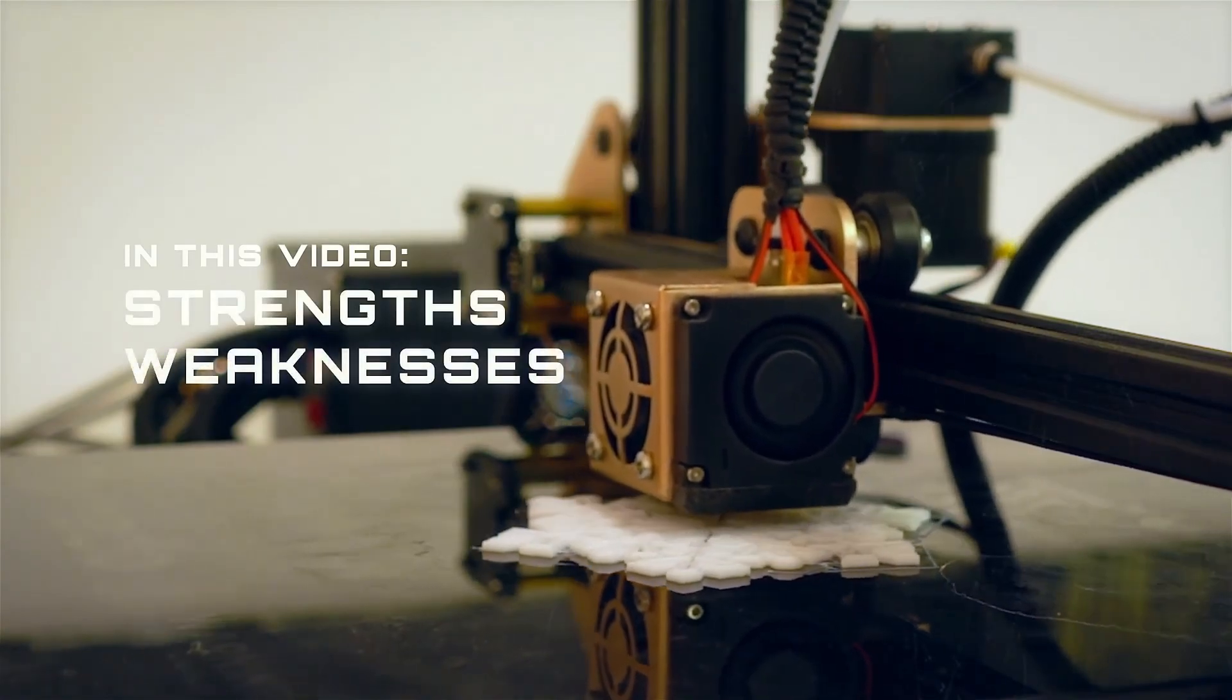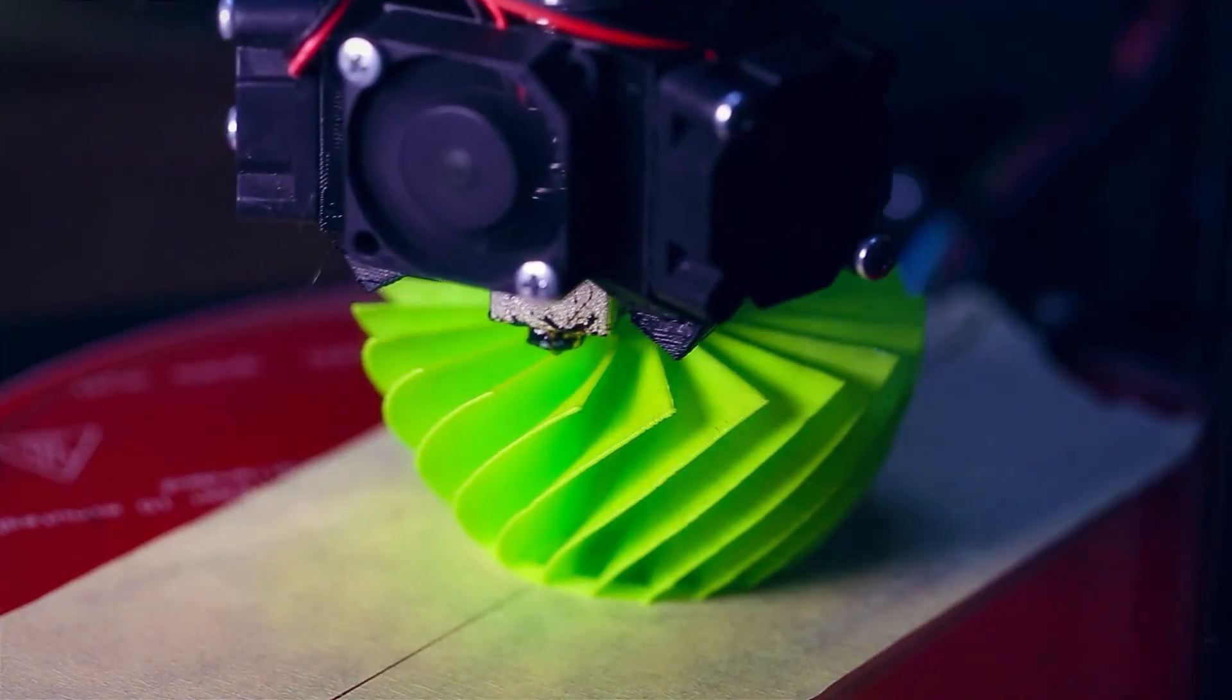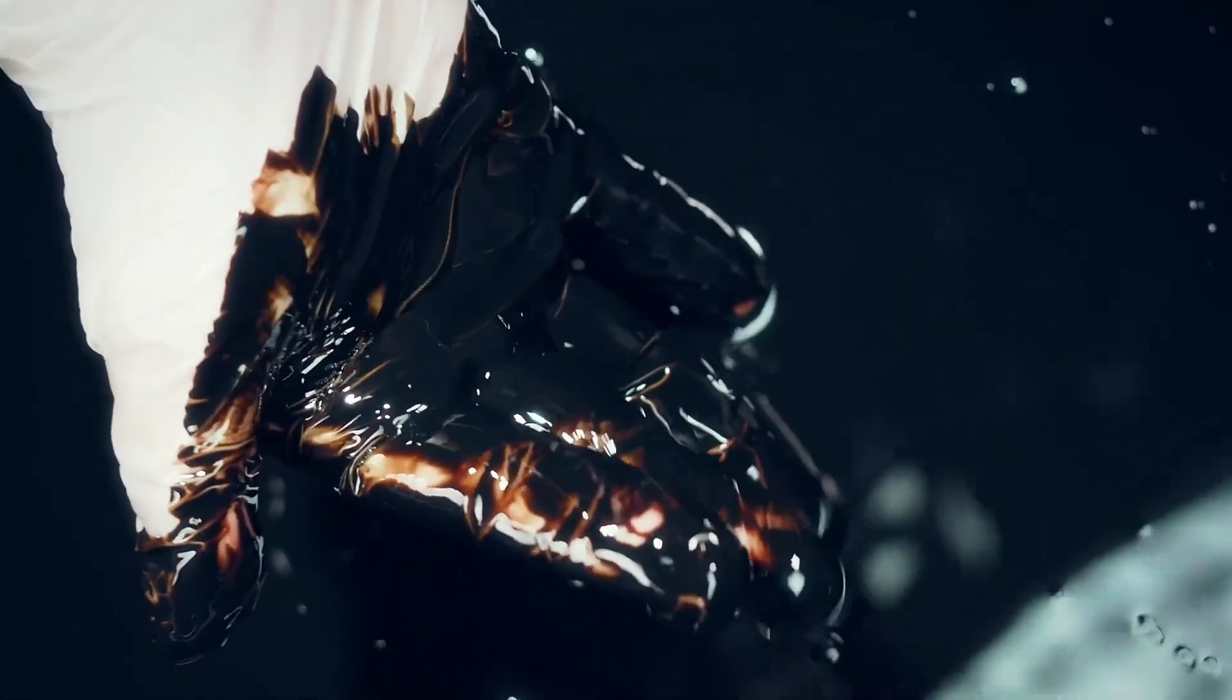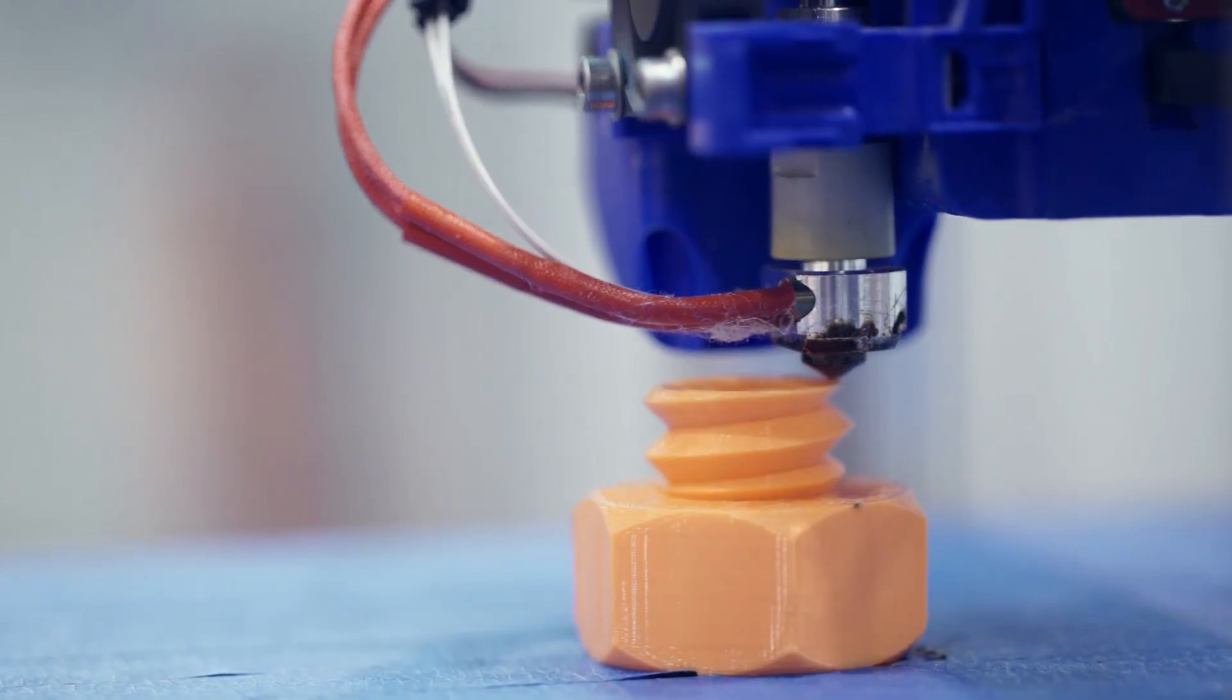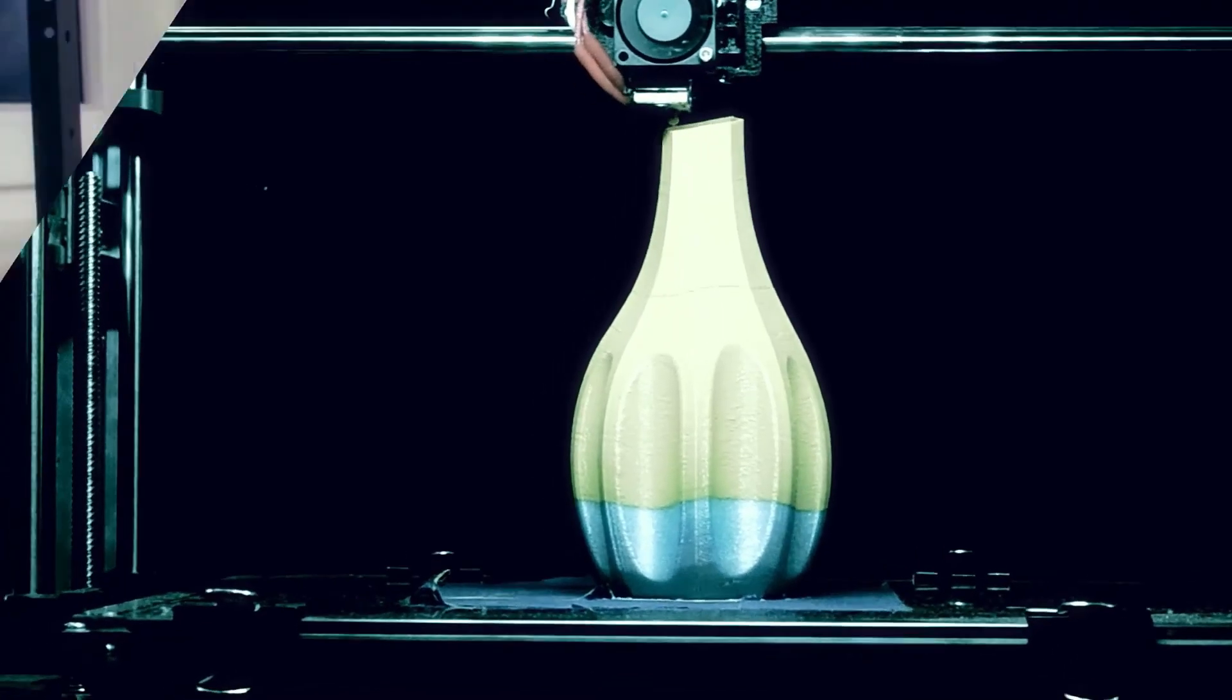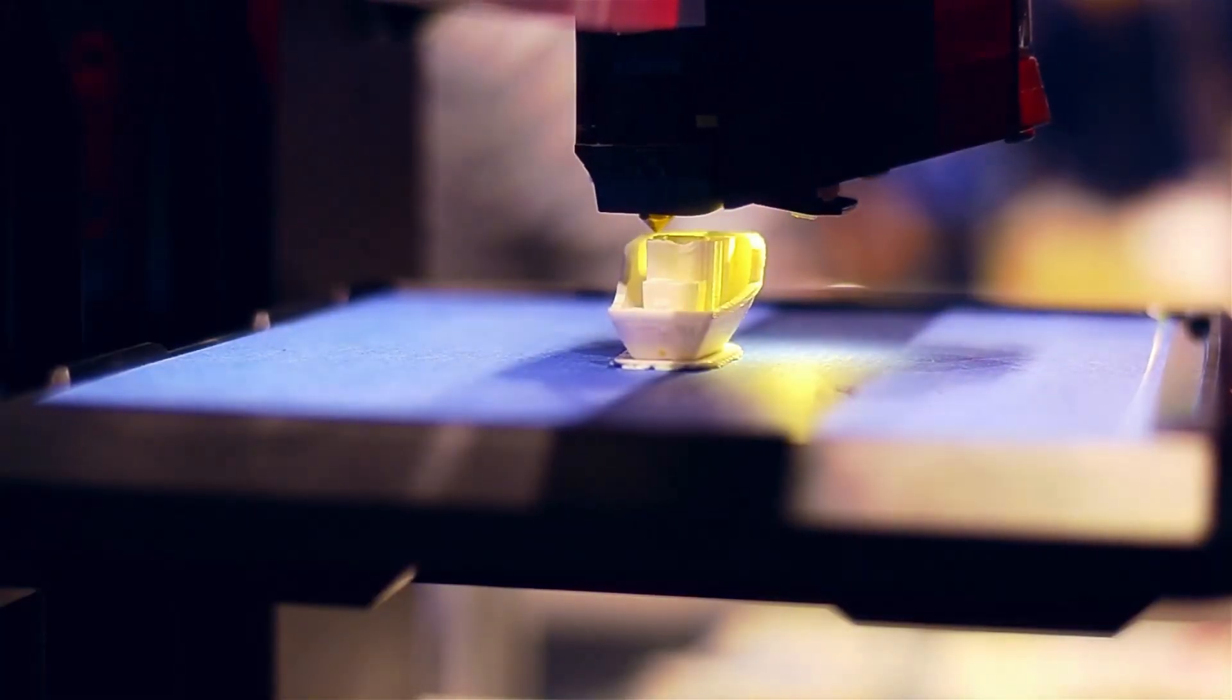Next let's talk about PETG. It's a thermoplastic that combines the ease of printing of PLA with some of the durability and flexibility of ABS. It is known for its toughness, impact resistance, and ability to withstand higher temperatures. PETG is more chemically resistant and UV resistant than PLA, which makes it suitable for outdoor applications and a lot more.